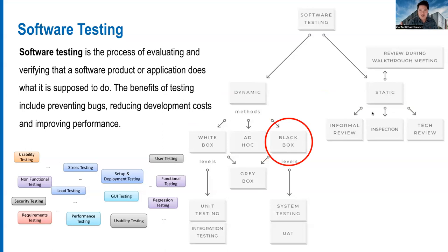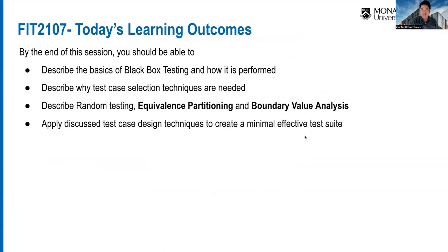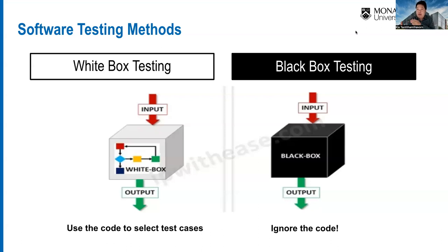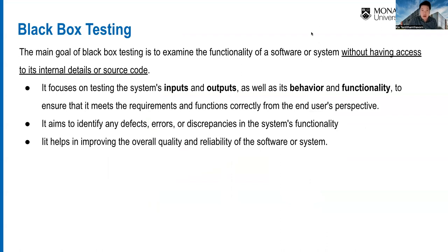Today we're going to learn about black box software testing. White box technique — we look at the code and decide test cases, aiming for 100% code coverage. For black box testing, we decide test cases without looking at the code, based on specification only, and then implement and test the code.